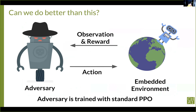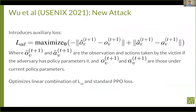One interesting question is whether we can develop a better attack with a higher win rate or more sample efficiency. Our attack simply embeds the fixed victim in the environment and trains an adversary using off-the-shelf model-free RL — we originally intended this as a baseline but it worked well enough that we didn't improve on it. Recent work by Zian Wu and others proposes an improvement: they augment the standard PPO loss with an auxiliary loss term that incentivizes the adversary to take actions that cause the victim to change its actions while minimizing changes to the victim's observations. They learn a differentiable model of the environment to estimate what observation the victim would see and what action it would take if the adversary had different parameters.